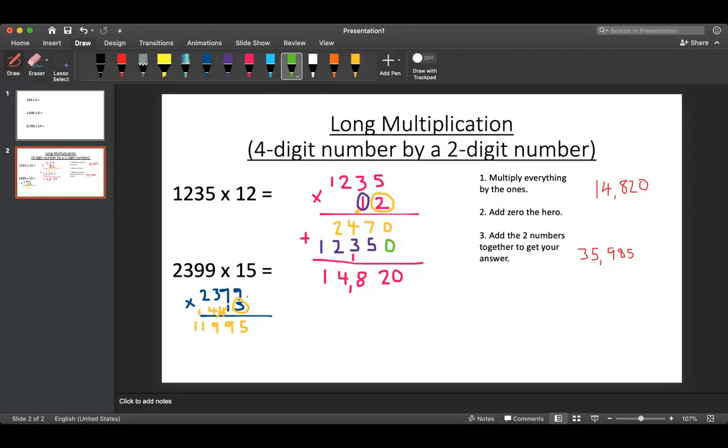Now I'm going to put my 0 the hero in. So I'm going to put my 0 down because I'm now multiplying everything by the 10s. So I'm just going to highlight the 1 there. I'm going to multiply everything by the 1. So 1 times 9 is 9, 1 times 9 is 9, 1 times 3 is 3, and 1 times 2 is 2.